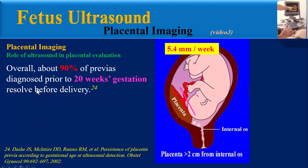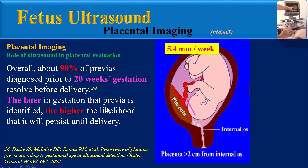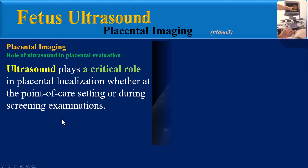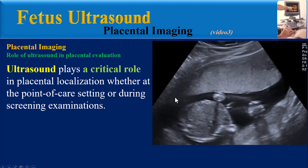Overall, about 90% of previas diagnosed prior to 20 weeks gestation resolve before delivery. The later in gestation that a previa is identified, the higher the likelihood it will persist until delivery. Specifically, placenta previa identified at around 24 weeks persists in approximately half of cases, whereas previa identified at 32 weeks persists in nearly 75% of cases.